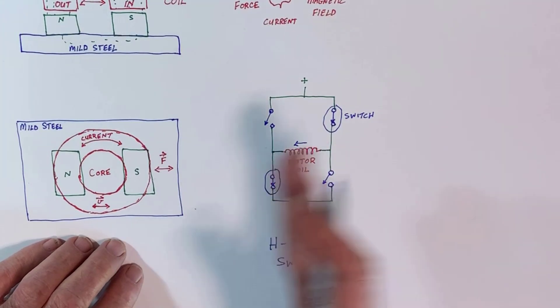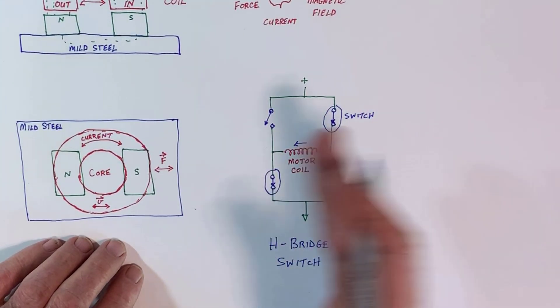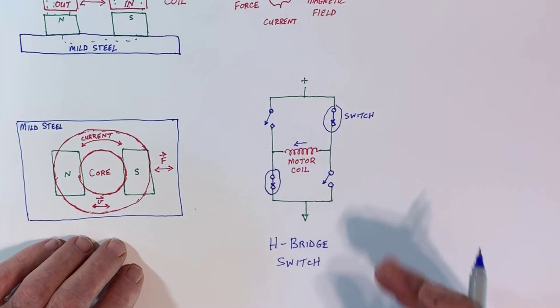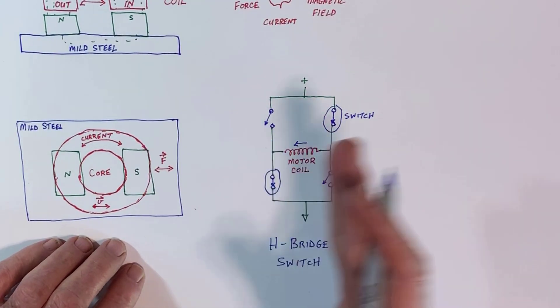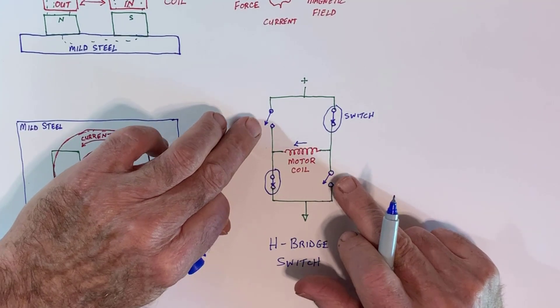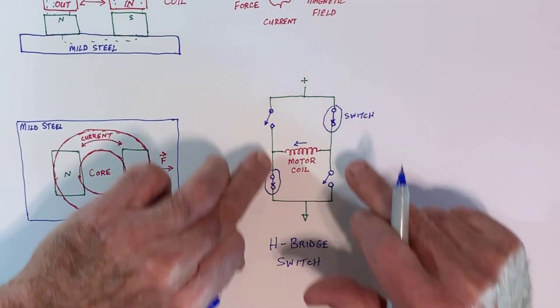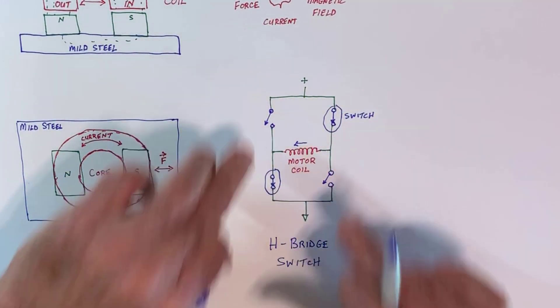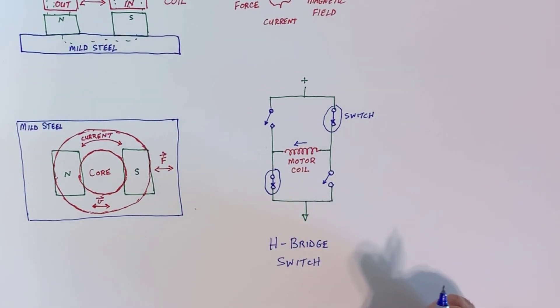And so, in the shaker table, this happens about six times a second. It goes bump, bump, bump, bump, bump, bump. So, the force is going back and forth at six hertz. And it's due to those switches opening and closing in pairs like that. So, that's an H-bridge switch.